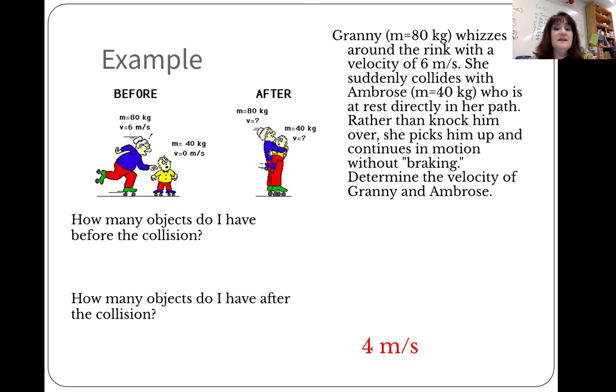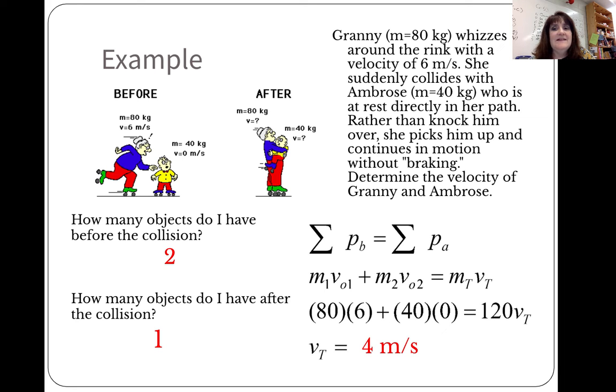So here's an example. Notice, how many objects do you have? I have two objects. And how many objects do I have after the collision? I have one object. Granny's going to pick up Ambrose. So, Granny, 80 kilograms, whizzes around the roller skating rink at a velocity of 6 meters per second. She suddenly collides with Ambrose, who's 40 kilograms, who is at rest directly in her path. Rather than knock him over, she picks him up and continues without breaking. So, the velocity of the two of them after should be 4 meters per second.